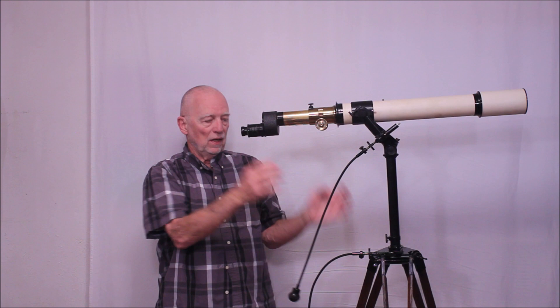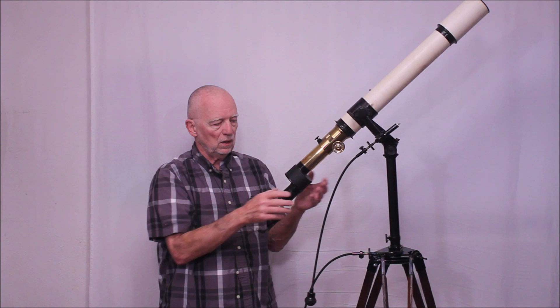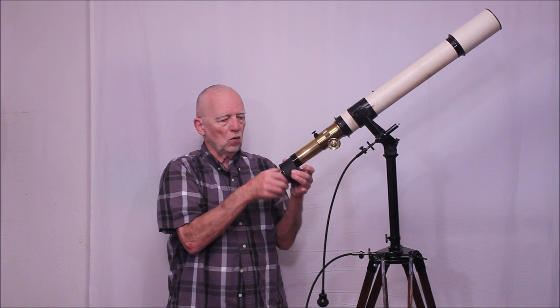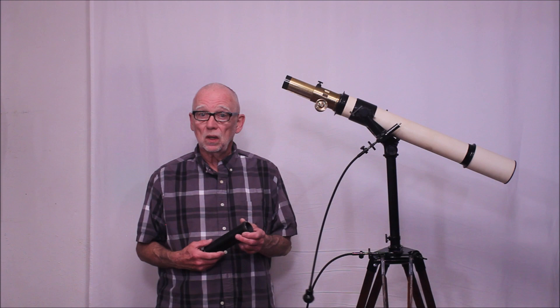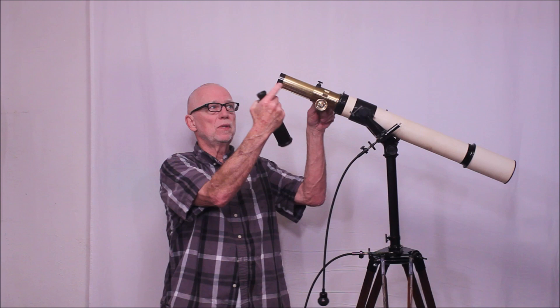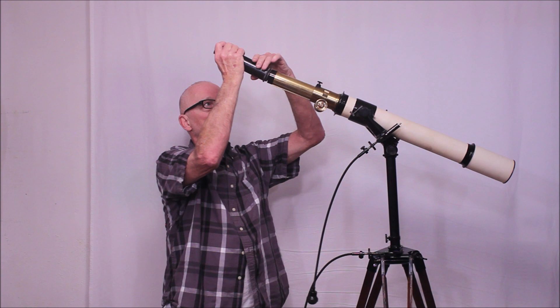If I want to use this for astronomy, they would have in the olden days apparently you would use it straight through. Probably disengage, remove the poro prism. Apparently back in the old days a lot of people would observe astronomical objects straight through. So in this case you would need the extension tube. This thing, this draw tube is nice and long. But not long enough to do the job. So you would use the extension tube.